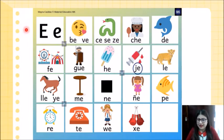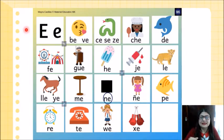Ge, ge, ge, ge, jeringuita. Le, le, le, le, leoncito. Ye, ye, ye, yehuita. Me, me, me, me, mesita. Ne, ne, ne, negro. Ñe, ñe, ñe, ñe, muñeca. Pe, pe, pe, pe, pececito.